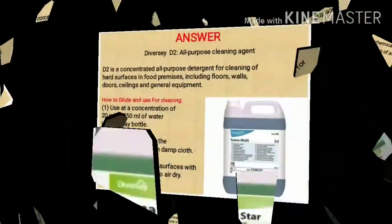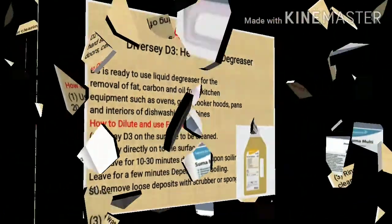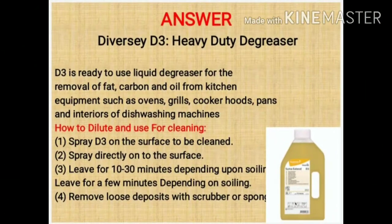Agla chemical hai D2. D2 multi-purpose detergent hai, isko hum kisi ke liye bhi use kar sakte hain — barthan dhone ke liye, floor cleaning ke liye, wall ke liye, door cleaning karne ke liye, kisi ke liye bhi use kar sakte hain. Iska dilution hai 750 ml water mein 20 ml.